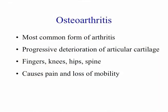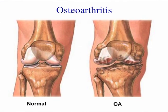Osteoarthritis is the most common form of arthritis worldwide. It is manifest by progressive deterioration of the articular cartilage covering the bone on joint surfaces. It involves the fingers, knees, hips, and spine, and it causes pain and ultimately loss of mobility. This is a schematic picture of the process in osteoarthritis with a normal joint on the left and an osteoarthritic joint on the right, showing the breakdown of articular cartilage as well as the formation of new bone growth, which are termed osteophytes.